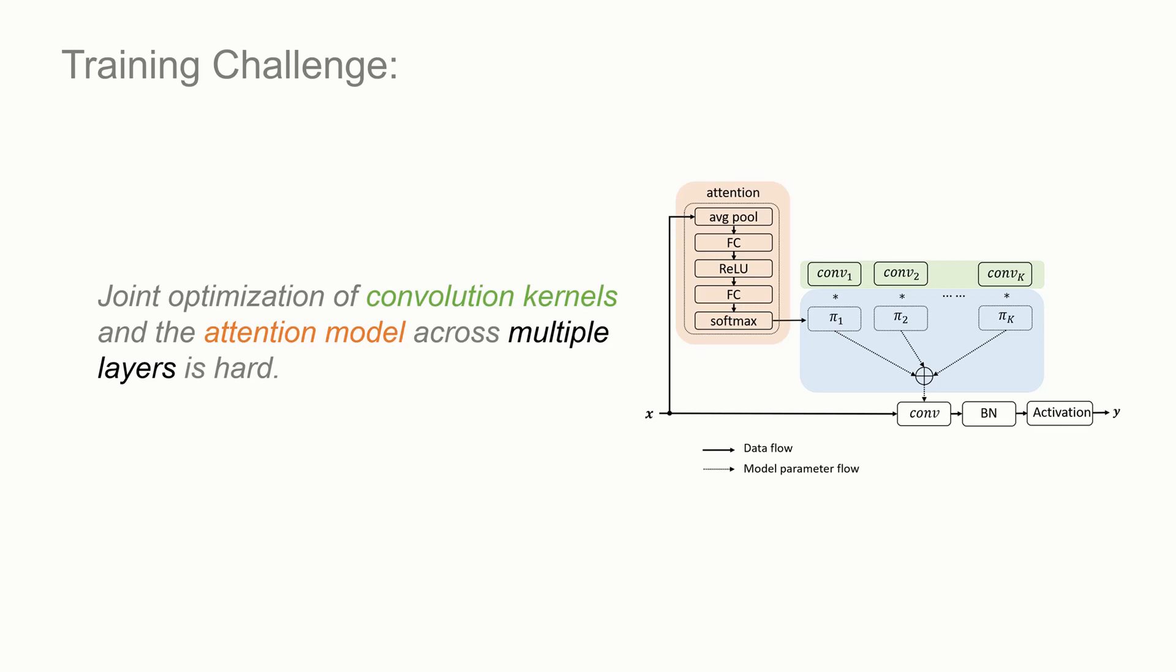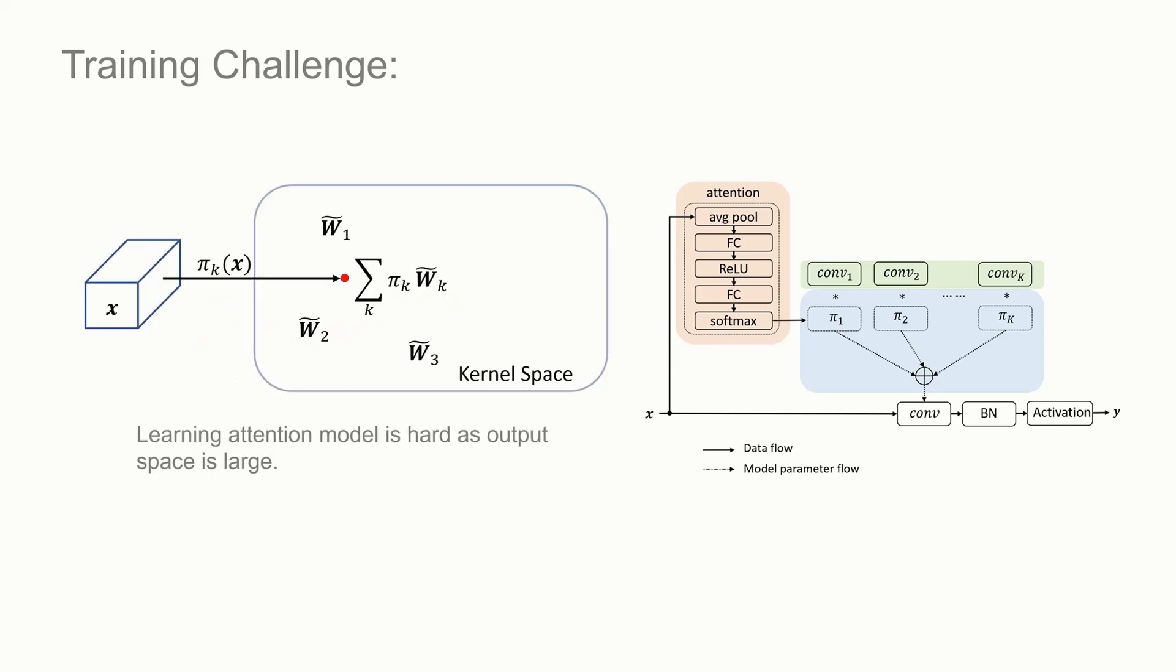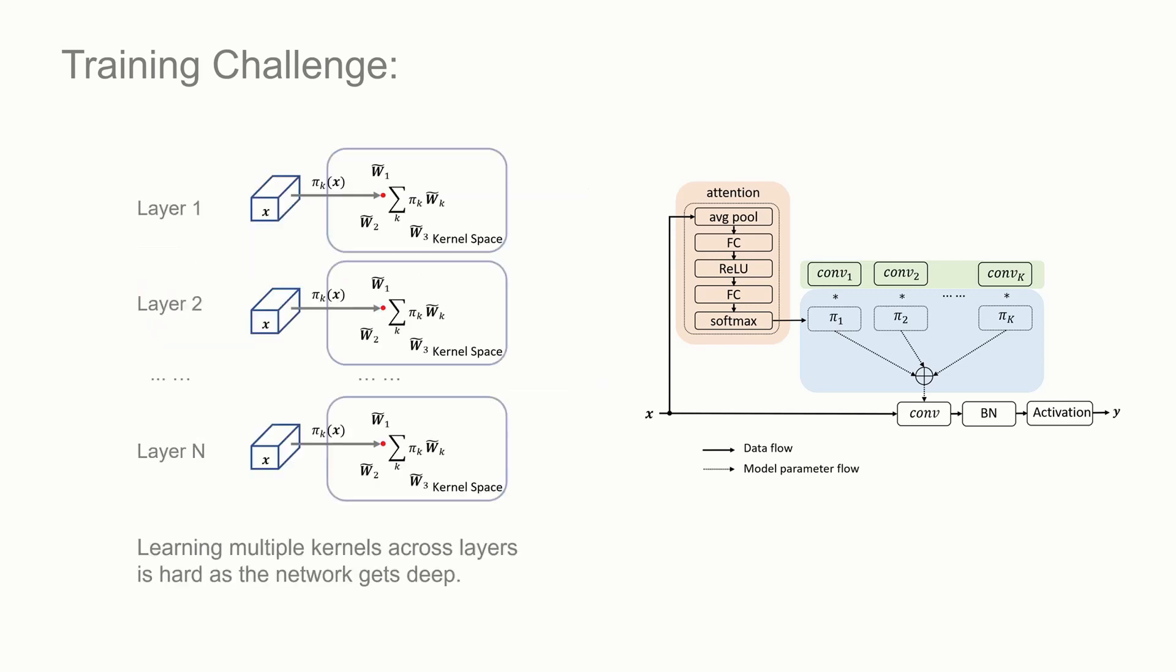Training dynamic convolution networks is challenging since joint optimization of both convolution kernels and the attention model is difficult, especially when the network gets deeper. This is because, first, the attention model π(x) is hard to learn as the output space of the aggregated kernel is large. Second, the combination of multiple kernels across layers explodes as the network gets deep.